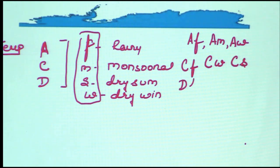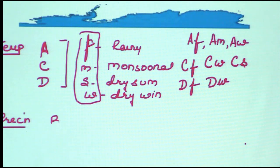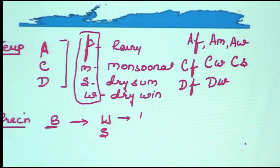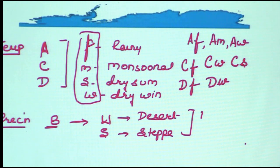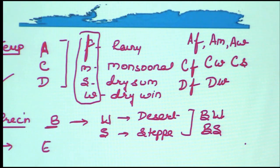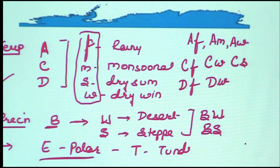Similarly, C-type climate uses the same lowercase letters: CF is subtropical with well-distributed rain, CW is subtropical with dry winters, and CS is subtropical with dry summers. D-type also uses DF for no dry season and DW for dry winters. For B-type dry climate, the second-level symbols are uppercase W for desert and uppercase S for steppe.